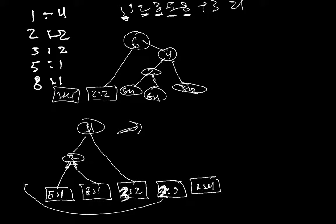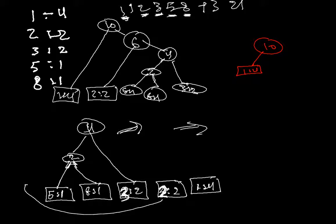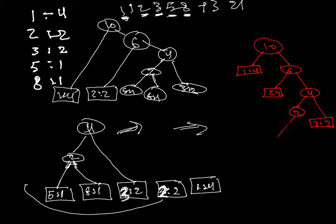Six is bigger, so we move this here and connect these two. We have six and one, giving us ten. As a final graph, we got ten at the root, with one and four as children; six has two and two; four has two and two; and we got three and two and two.